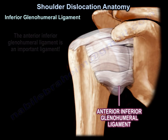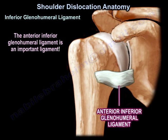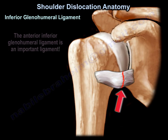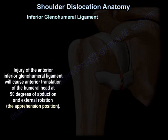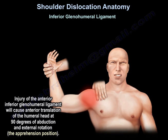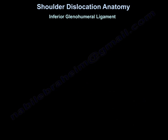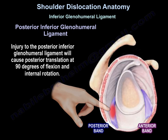The anterior inferior glenohumeral ligament is an important ligament. Its injury will cause anterior translation of the humeral head at 90 degrees of abduction and external rotation — this is the apprehension position. The posterior inferior glenohumeral ligament's injury will cause posterior translation at 90 degrees of flexion and internal rotation.